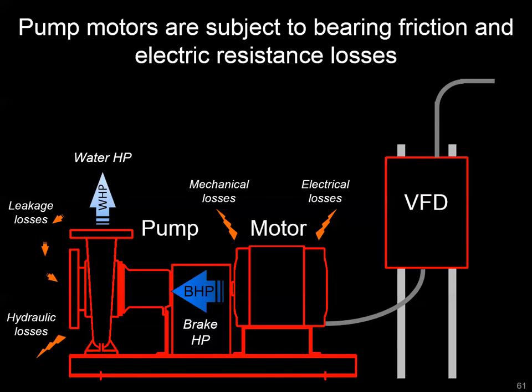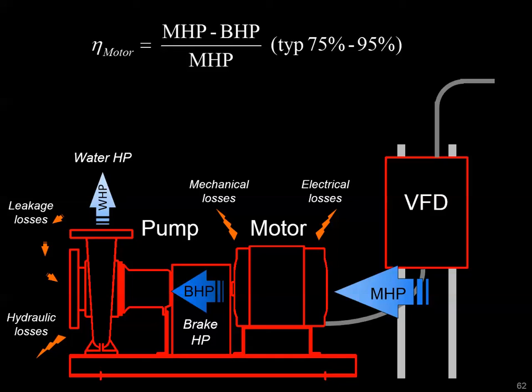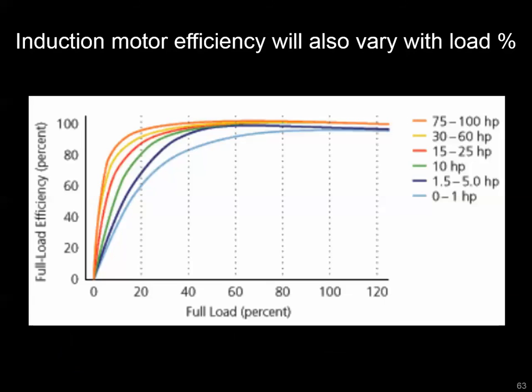The motor also has its own inefficiencies: mechanical losses from friction in the bearings, and electrical losses from resistance in the windings — those IR-squared resistive losses. This requires additional energy supplied as motor horsepower to provide the needed brake horsepower. Keep in mind that with induction motors, efficiency drops as you move further from full load, becoming significant below about 50 percent load. If your pump frequently runs below that threshold, you'll see efficiency drops commensurate with motor size.